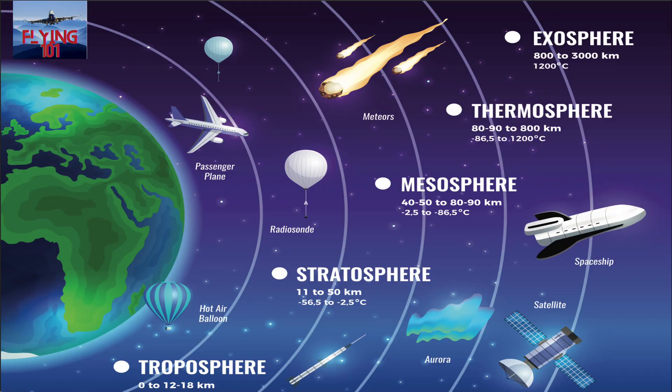The atmosphere can be viewed as an ocean of air that rotates with the Earth and extends from the surface to the fringes of space. It comprises five layers. The lowest layer is the troposphere, which extends from the surface to an average height of about 11 kilometers. In the troposphere, temperature reduces with an increase in height at an average rate of two degrees Celsius per 1,000 feet. This layer is significant from an aviation standpoint because nearly all weather and almost all flying takes place in the troposphere, with a little weather and some flying also occurring in the stratosphere above.